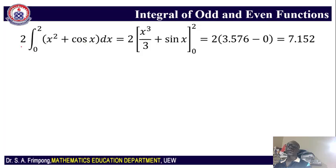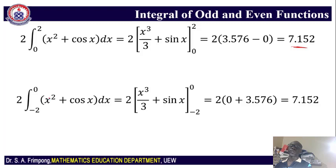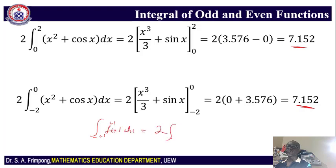Now if you pick 2 times the integral from 0 to 2 of the same function, you're going to get the same 7.152 when you substitute. And when you pick 2 times the integral from negative 2 to 0, you're going to get the same value. So that's why we say the integral from negative l to l of f(x) dx is actually 2 times the integral from 0 to l of the same function dx.